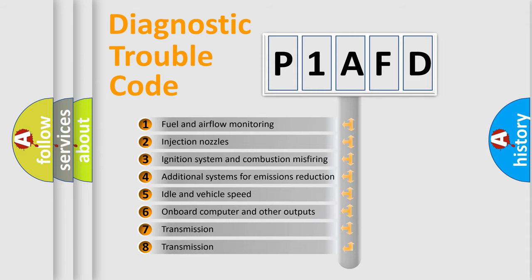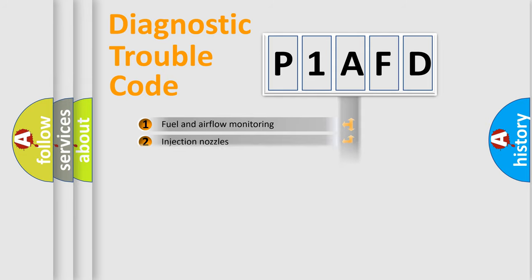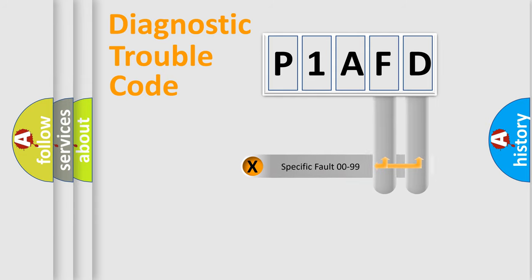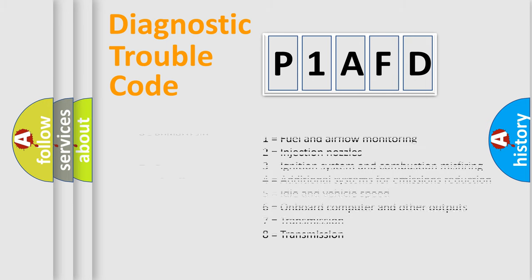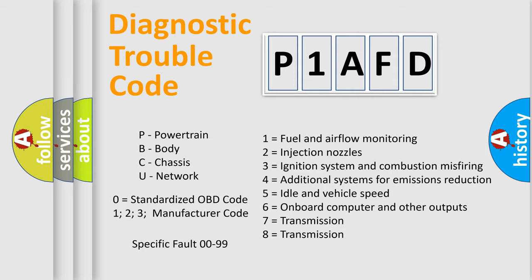The distribution shown is valid only for the standardized DTC code. Only the last two characters define the specific fault of the group. Let's not forget that such a division is valid only if the second character code is expressed by the number zero.